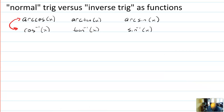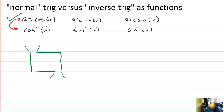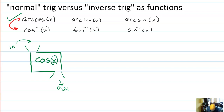Let's think about these as functions — I'll focus on cosine. Think of a function as a machine with inputs and outputs. Starting with just cosine of x: what goes in? Things like cosine of 30 degrees or cosine of 7 pi over 5. The things that go in are angles — those are the inputs to cosine.